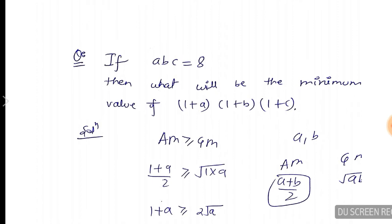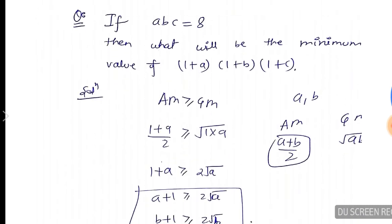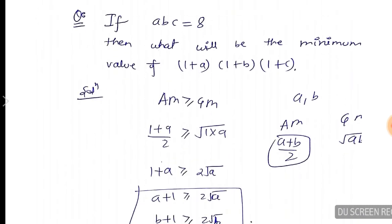The question is: if ABC is equal to 8, then what will be the minimum value of (1+A) into (1+B) into (1+C)? Please pause the video and try the question for yourself first.